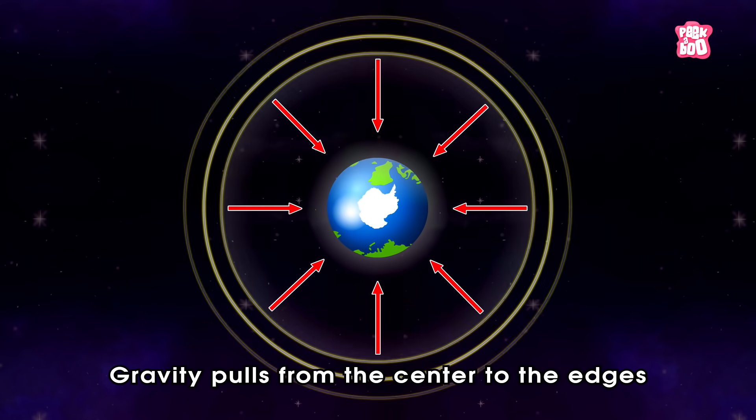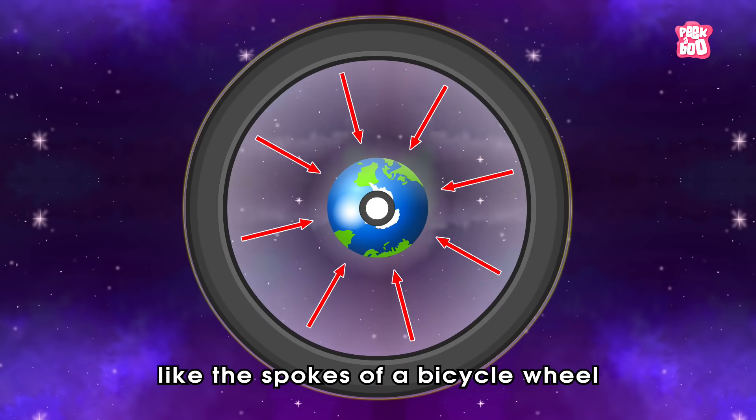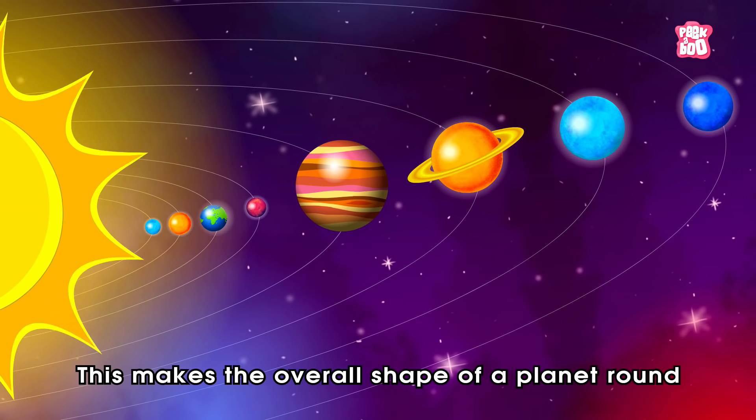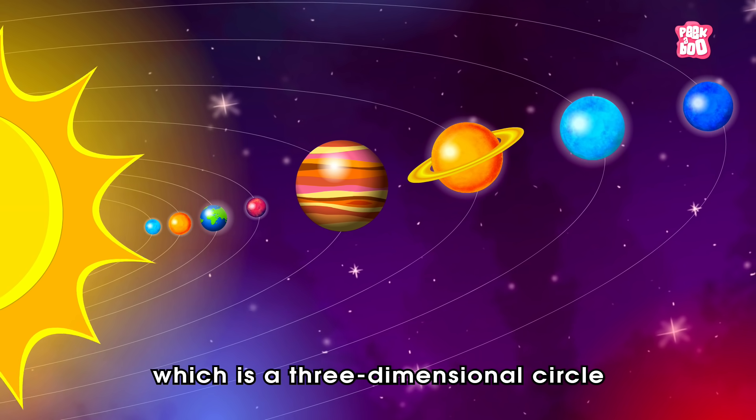Gravity pulls from the centre to the edges like the spokes of a bicycle wheel. This makes the overall shape of a planet round, which is a three-dimensional circle.